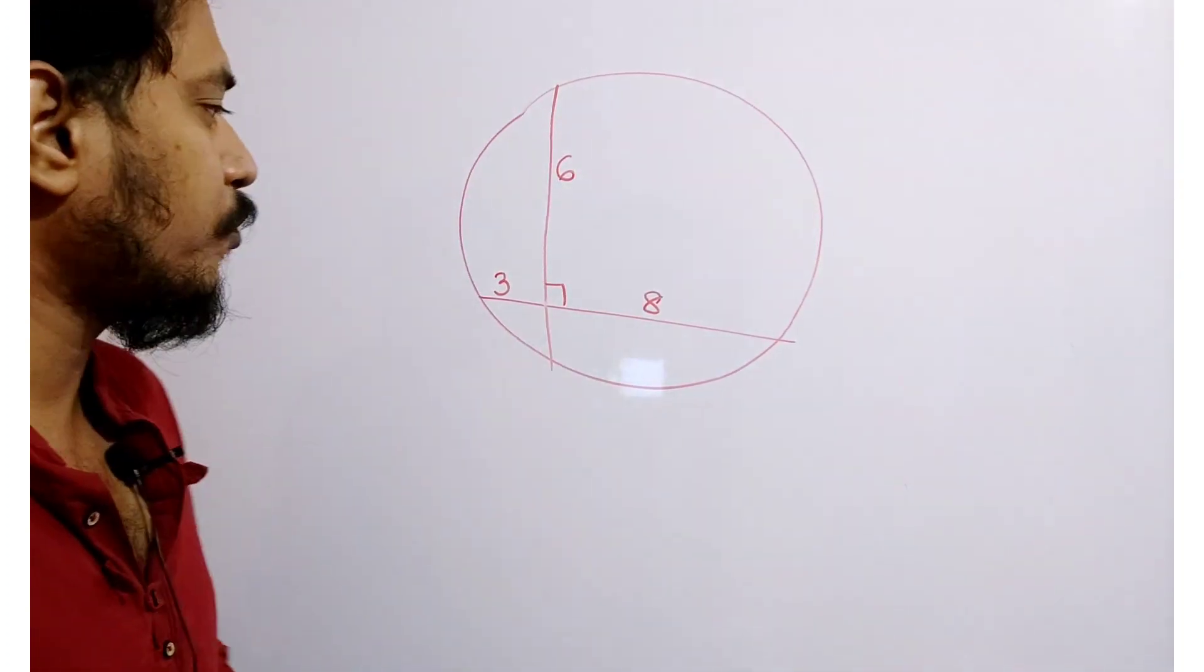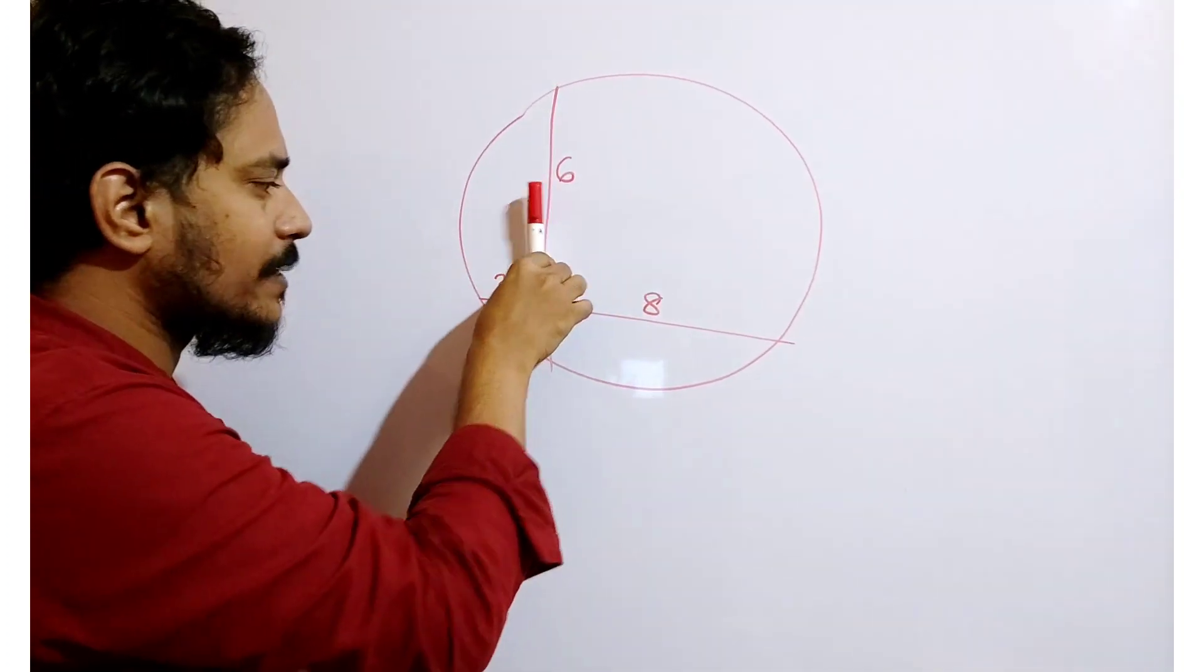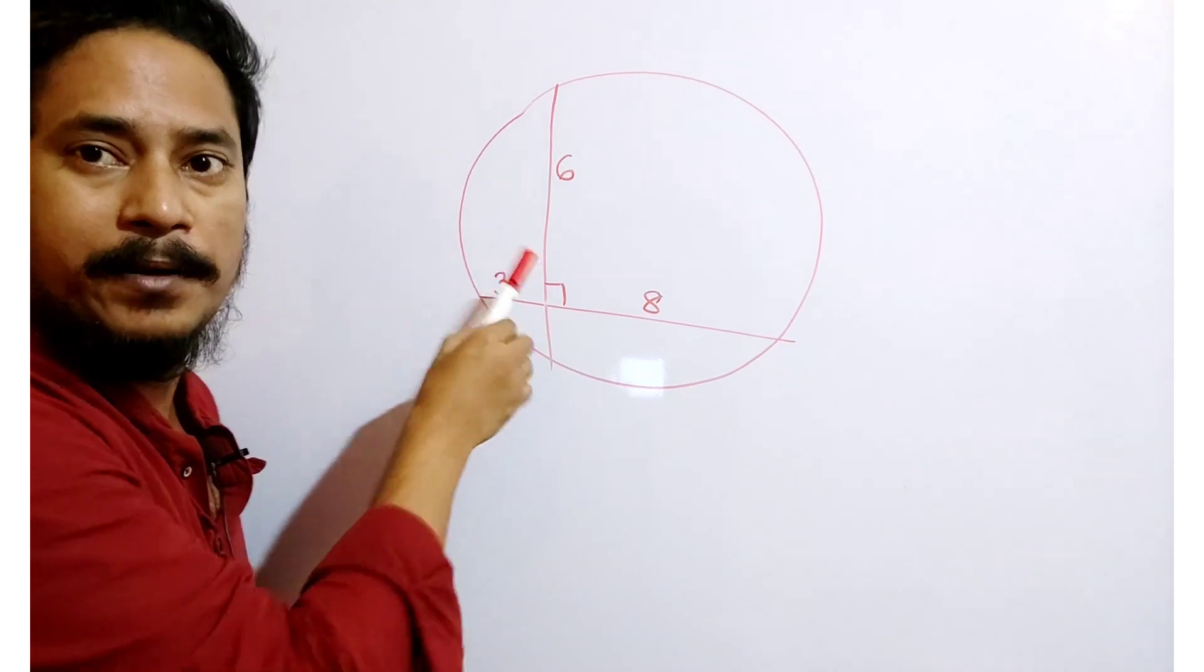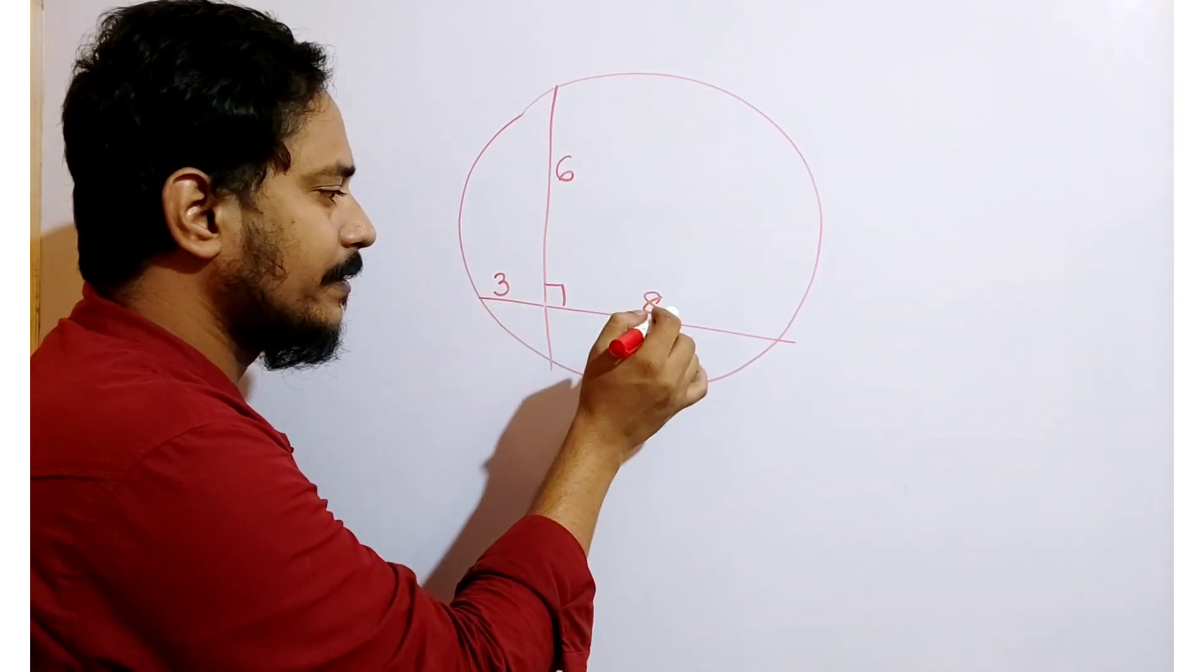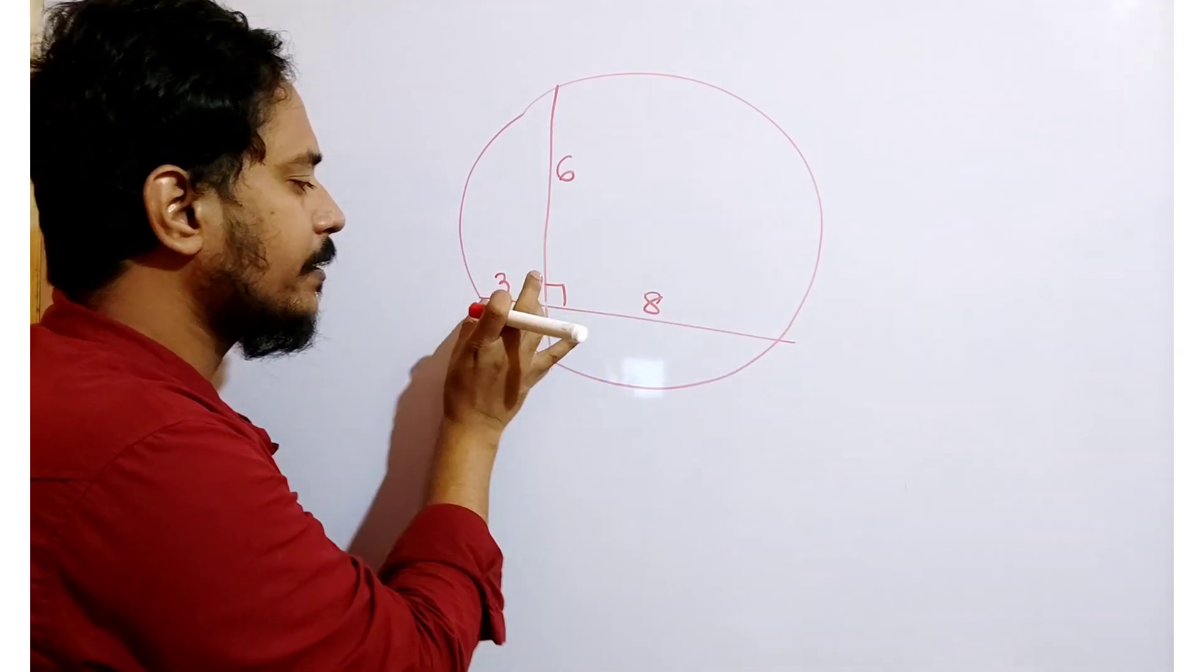Hello students, in this position these two chords intersect at this point perpendicularly. This length is 8 unit,